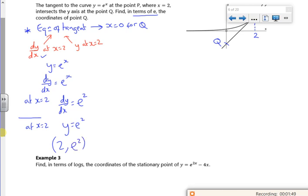So the coordinate is 2 comma e squared. Now we don't like leaving things in terms of e when we start off. But my equation of my tangent, so using y minus y1, will be y minus e squared equals e squared times x minus 2. So that's my equation.